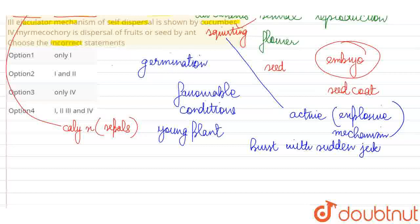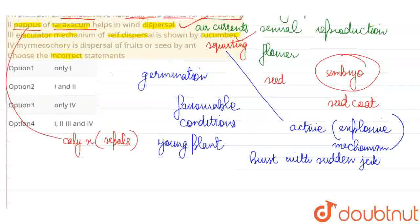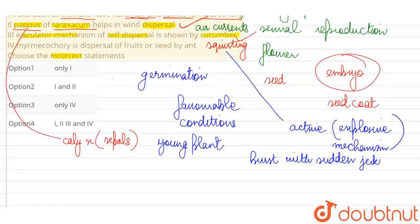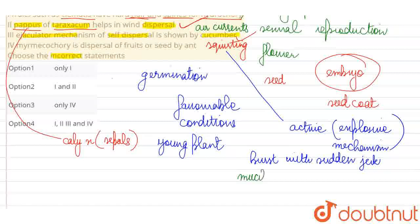In this case, we can say that because the fruit bursts with a mucilaginous liquid in a jet form, with a mucilaginous fluid.